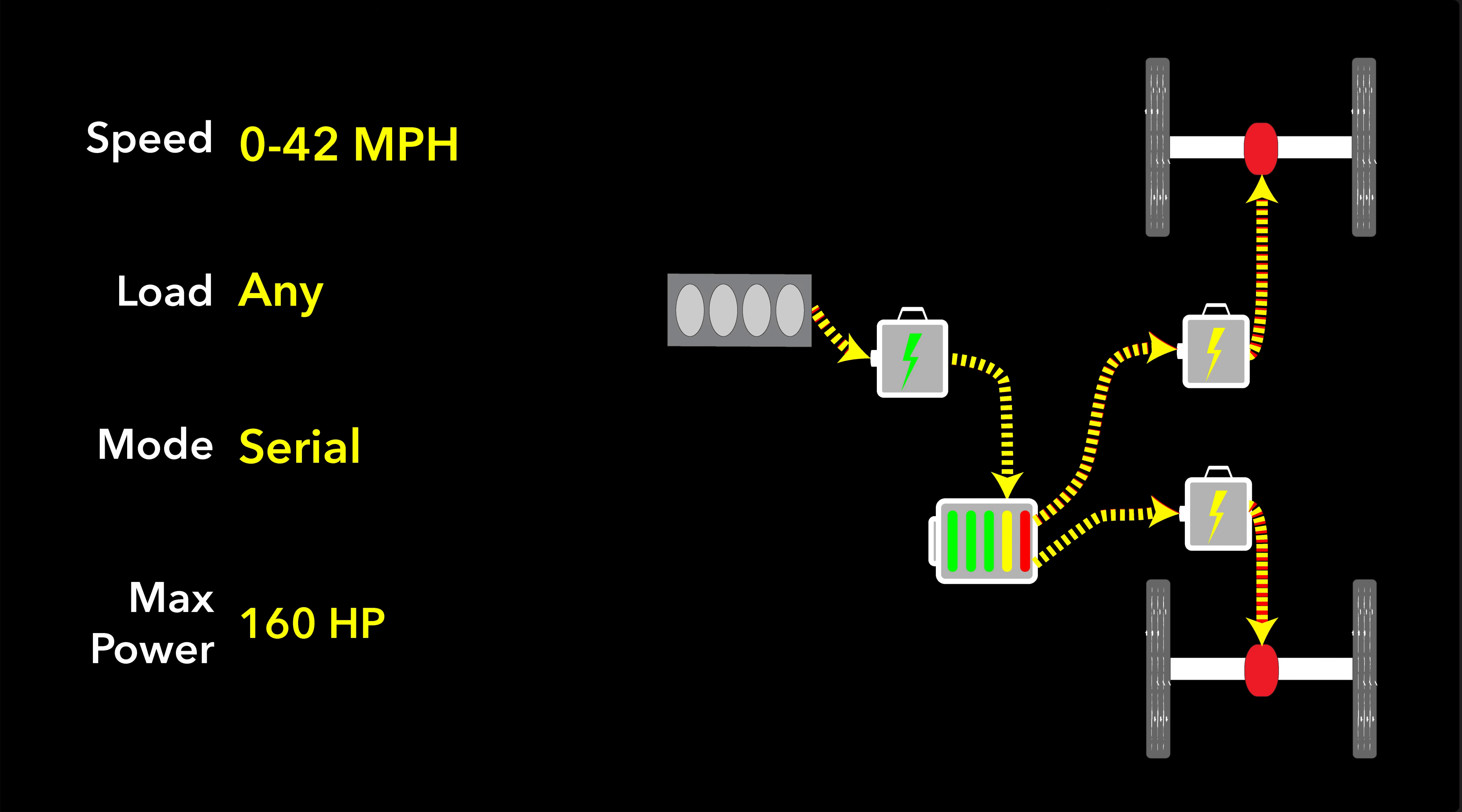The engine is turning, it's running a generator, the generator is sending power to those electric motors. Maximum power is 160 horsepower as long as there's charge available in the battery. If the battery drops down to some other state of charge, then the maximum power you could get is about 94 horsepower.